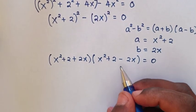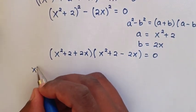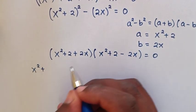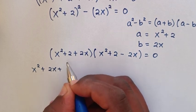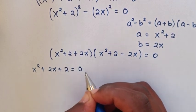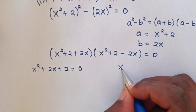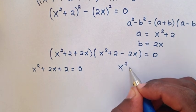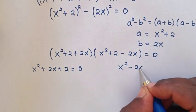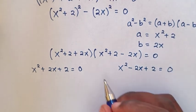From here we have two cases: the first case is x² + 2x + 2 = 0, and the second case is x² - 2x + 2 = 0.